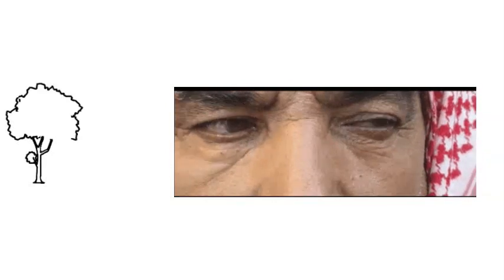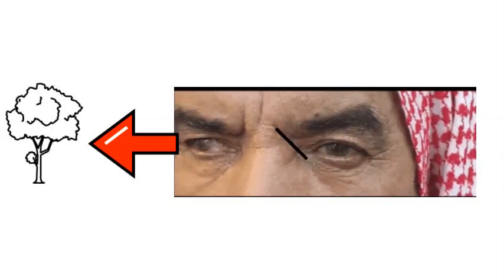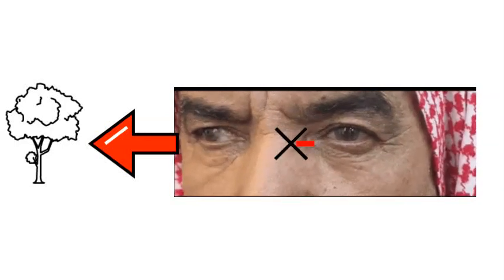Now look to this man who's told to look to the tree. His right eye moves normally towards the tree, while his left eye failed to adduct towards the target.